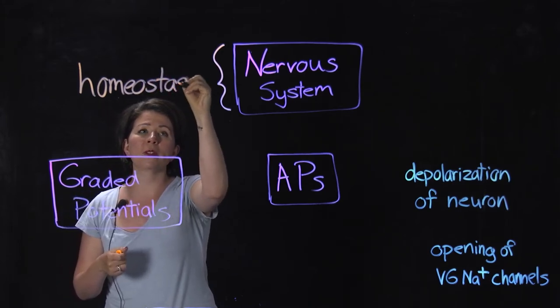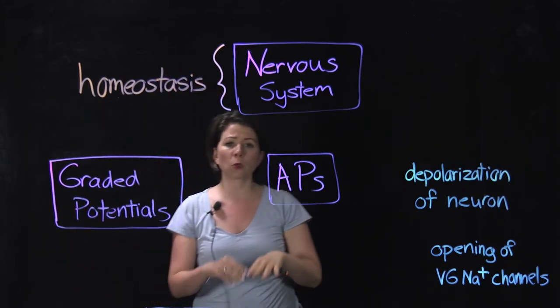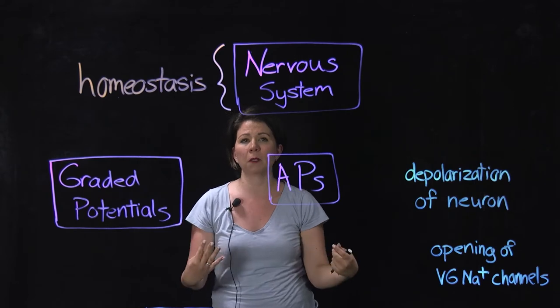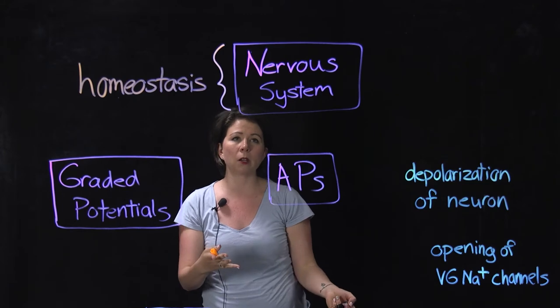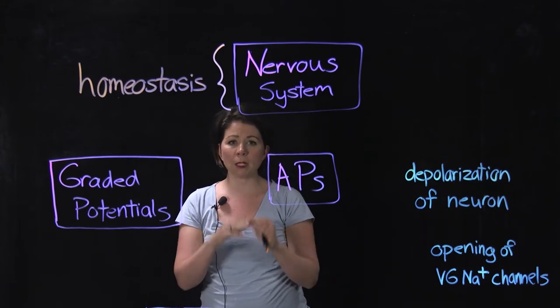This gets back to homeostasis. Right? First lecture, homeostasis, that maintenance of those relatively stable internal environments. And this is important because the nervous system, along with the endocrine system, which Dr. Baya will talk about, are really important in maintaining homeostasis.